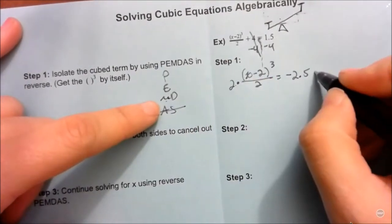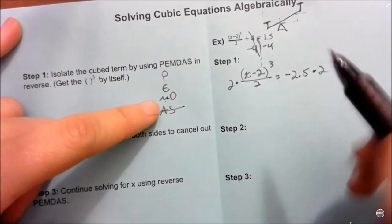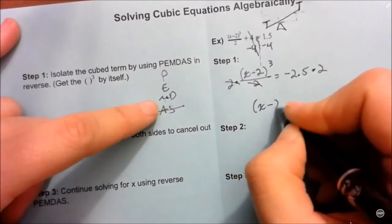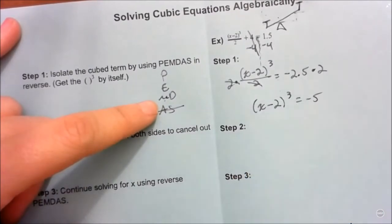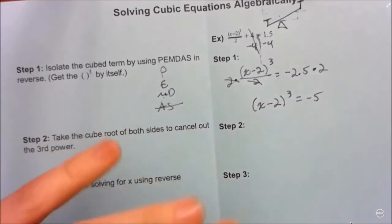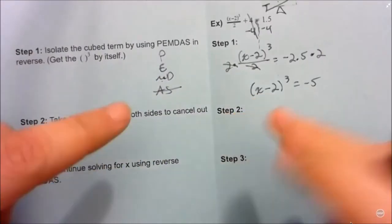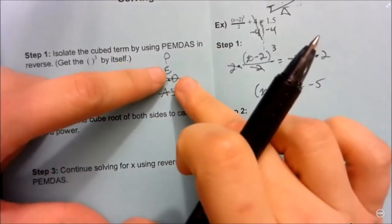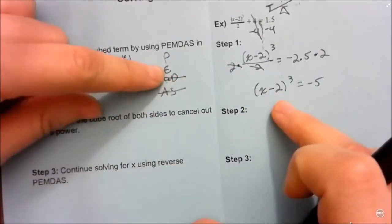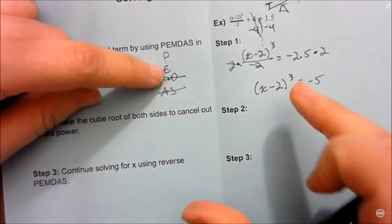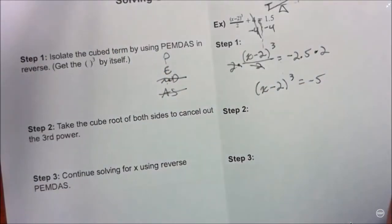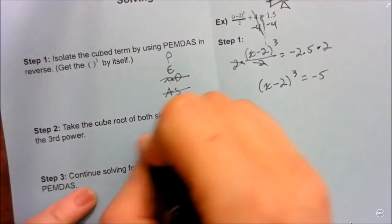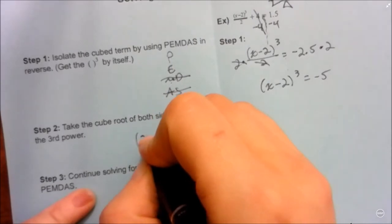I cancel out the division by 2 by multiplying both sides by 2 — again, both sides of the equal sign — and now I'm one step closer to having X all by itself. We're done multiplying and dividing. All I have left to do is my exponent step before I get inside the parentheses. So how do I cancel an exponent? Does anybody remember?